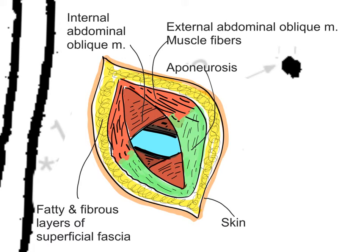Then there are the internal abdominal oblique muscle fibers, which go upwards and medially — as opposed to the downwards and medially of the external oblique — or if you prefer, 'hands in back pockets' goes downward and laterally. These fibers are split rather than cut during surgery, because it's painful to cut muscles if you don't need to, and they are then pulled apart and held open by retractors.